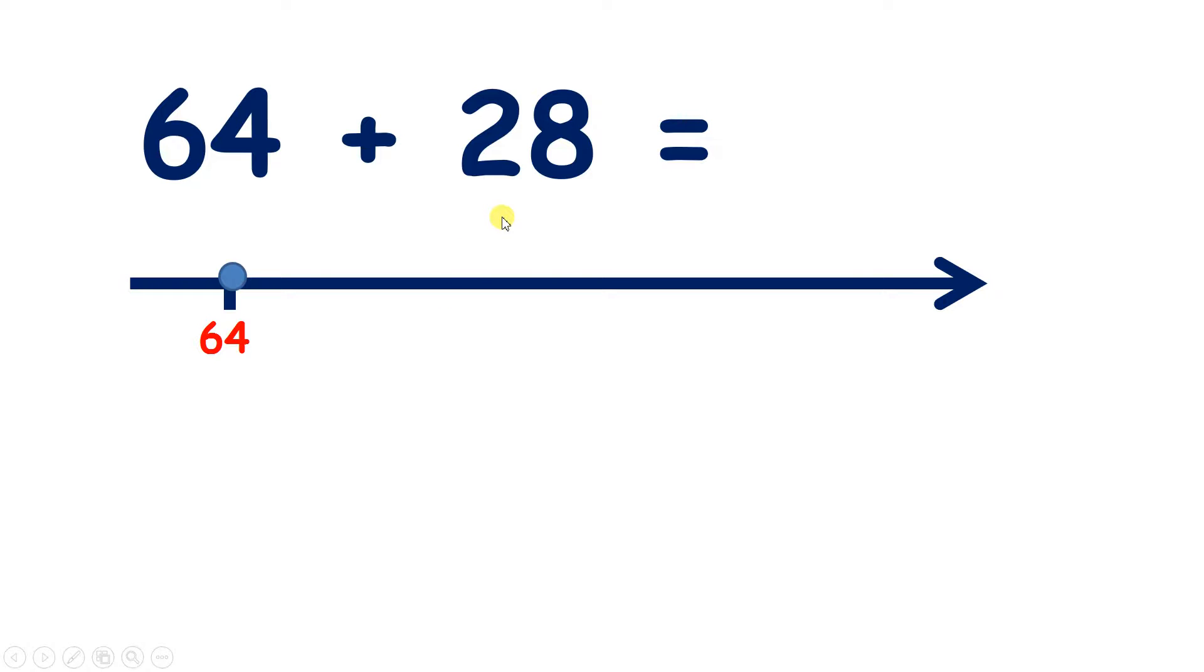So how could you quickly add 28? Well, 28 is 2 less than 30. So if we add 30 to 64, we have 94. But we've added 30, so we've added 2 too many.